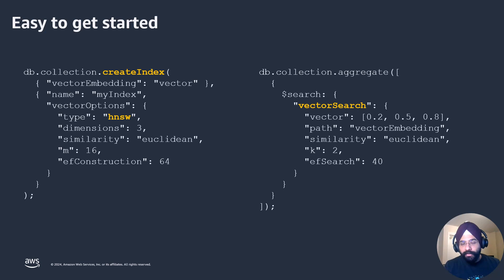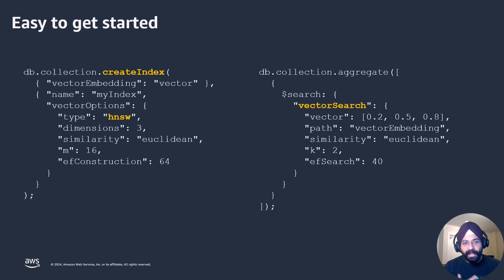Create index and dollar search are existing MongoDB APIs, and within that we have given the functionality of vector search. JSON is the base, very easy to read and write code.